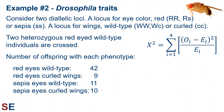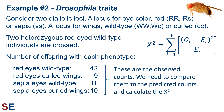Now let's consider two diallelic loci in the fruit fly Drosophila with dominant alleles at each. There's one locus for eye color with a dominant red allele, such that genotypes RR and RS will have the red eye phenotype, and genotype SS will have the recessive sepia eye phenotype. There's one locus for wing morphology with a dominant wild-type allele, such that genotypes WW and WC will have the wild-type phenotype, and genotype CC will have the recessive curled wing phenotype. Two heterozygous red-eyed wild-type individuals are crossed. We get 42 offspring with red eyes and wild-type wings, 9 with red eyes and curled wings, 11 with sepia eyes and wild-type wings, and 10 with sepia eyes and curled wings.